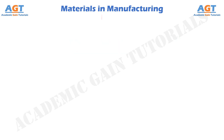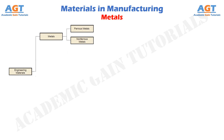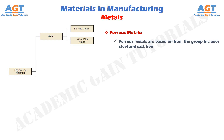Metals used in manufacturing are usually alloys, which are composed of two or more elements, with at least one being a metallic element. Metals and alloys can be divided into two basic groups: ferrous and non-ferrous. Ferrous metals are based on iron; the group includes steel and cast iron. These metals constitute the most important group commercially — more than three-fourths of the metal tonnage throughout the world. Pure iron has limited commercial use, but when alloyed with carbon, iron has more uses and greater commercial value than any other metal.